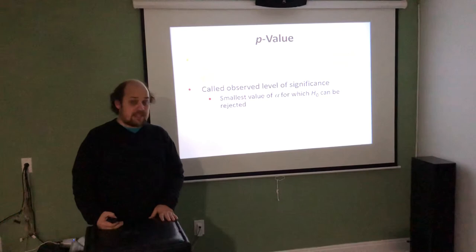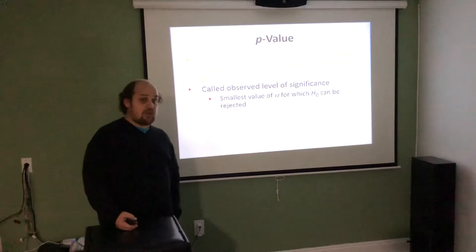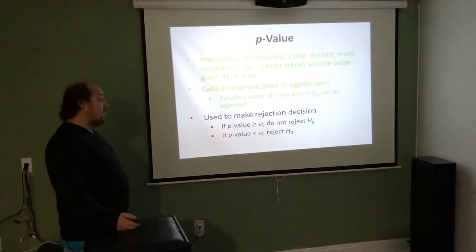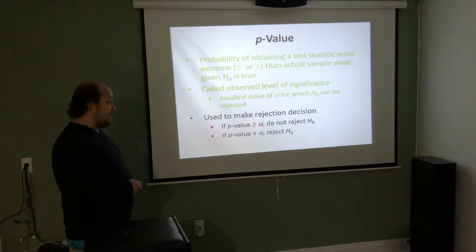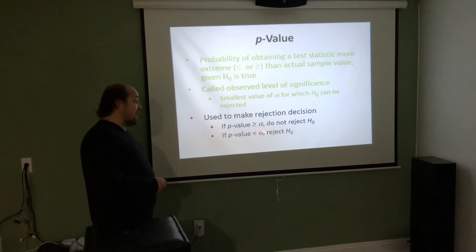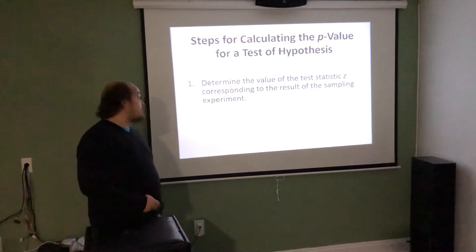We find the p-value and then compare it to alpha. If the p-value is less than alpha, we reject the null. If the p-value is greater than alpha, we fail to reject the null. Specifically: if p-value ≥ alpha, fail to reject H₀; if p-value < alpha, reject H₀.